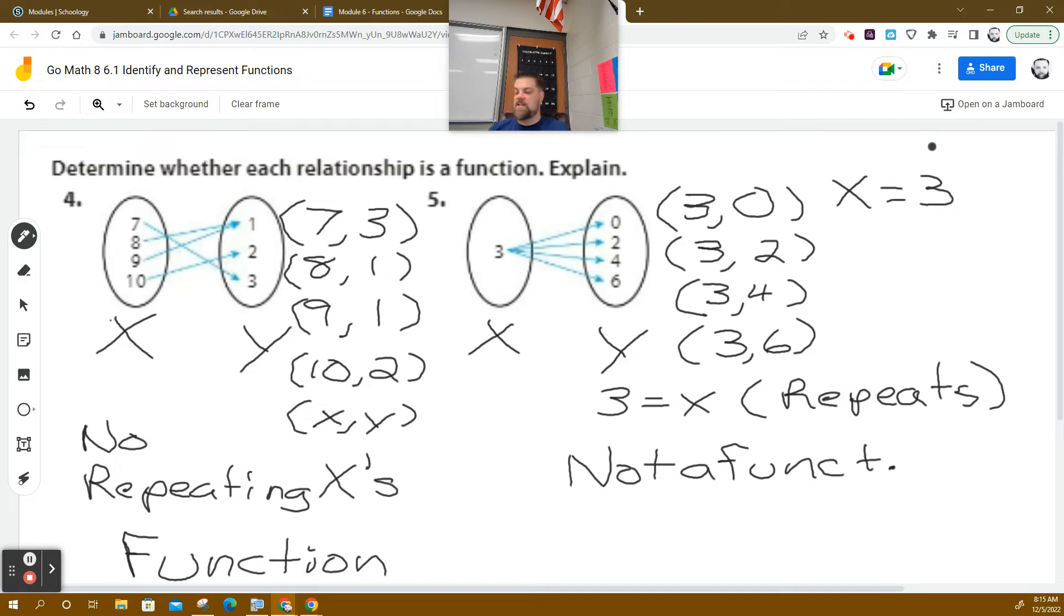What that means is, when I plug in a seven on this first one, when I plug in a seven, seven is only going to map to one Y value. Eight is my input. So let's write that down too. So for every, and maybe that might help, the way that it's set up or structured, as the X values are considered inputs and the Y values are considered outputs.